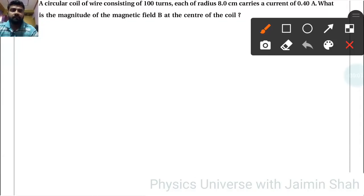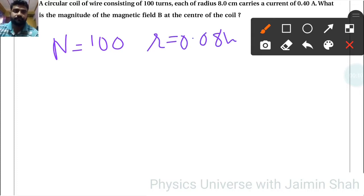A circular coil of wire consisting of N equals 100 turns, each of radius R equals 0.08 meters, carries a current I equals 0.4 amperes. What is the magnitude of the magnetic field B at the center of the coil?